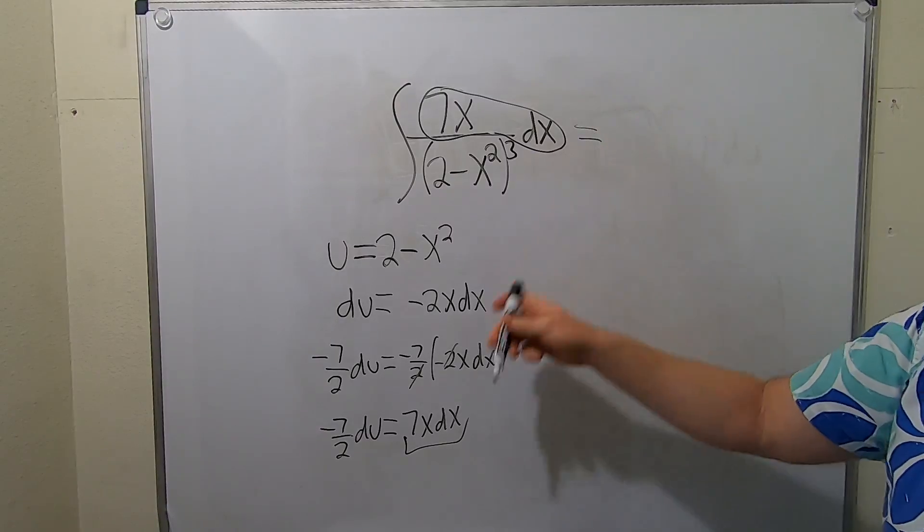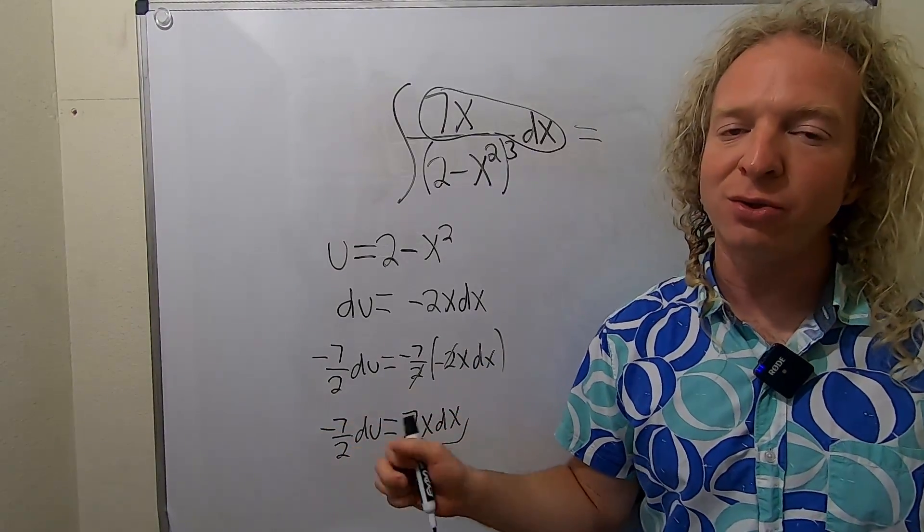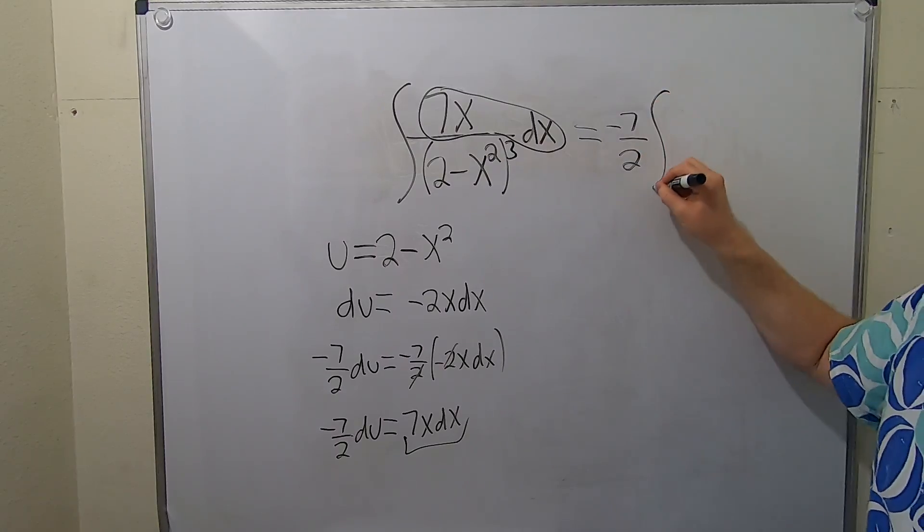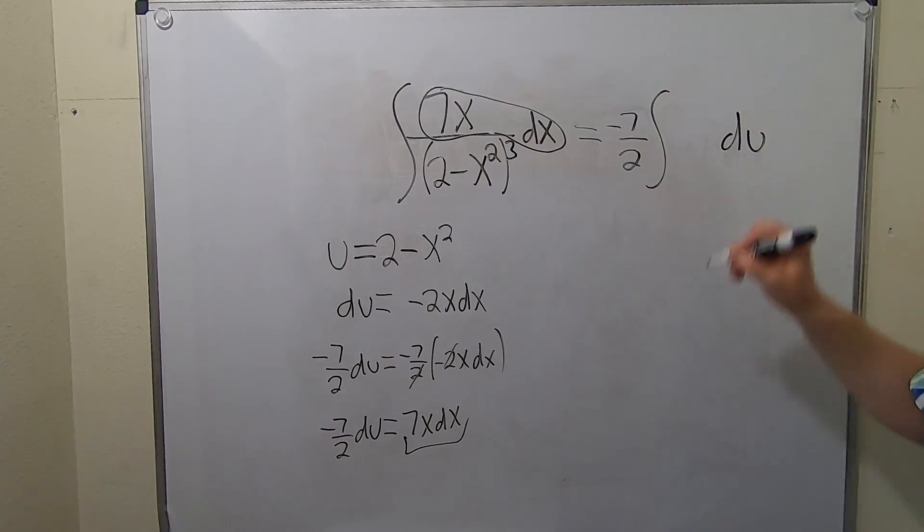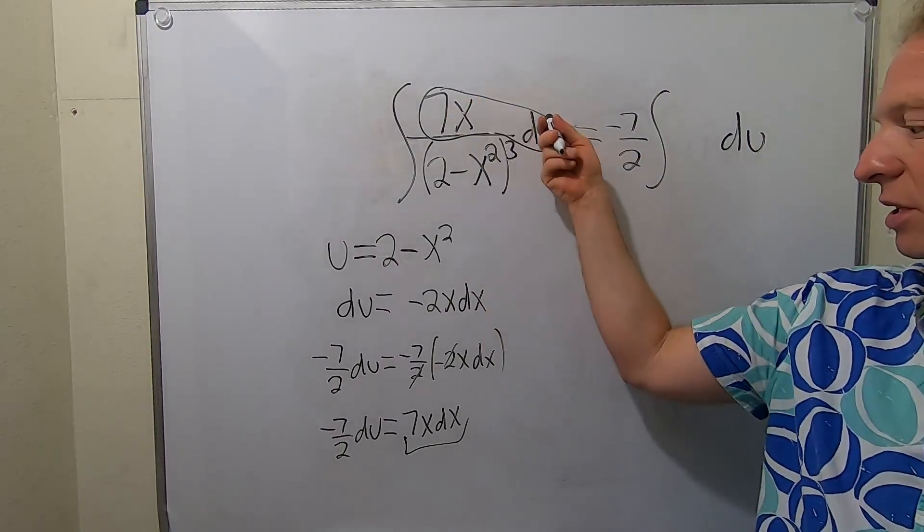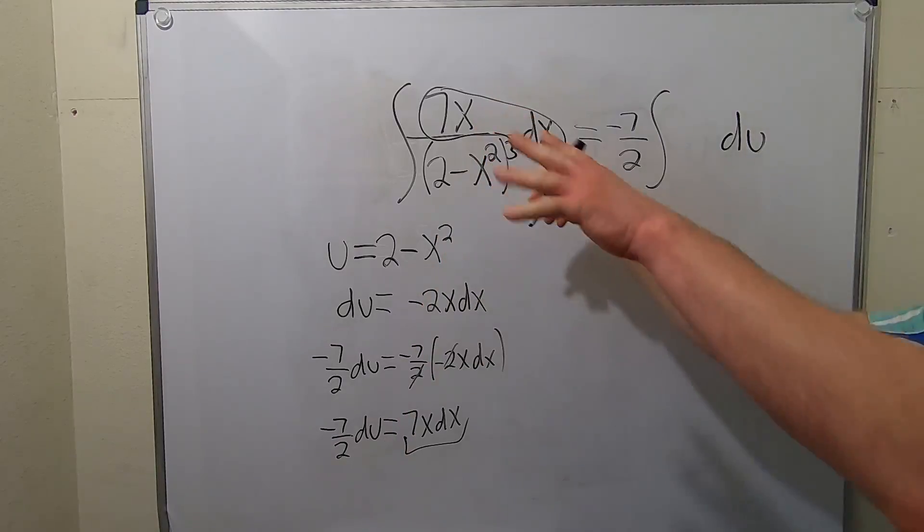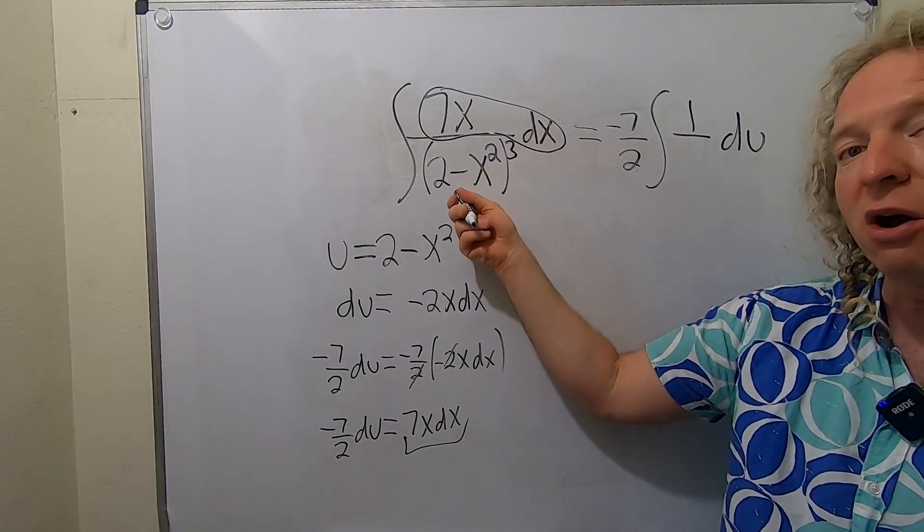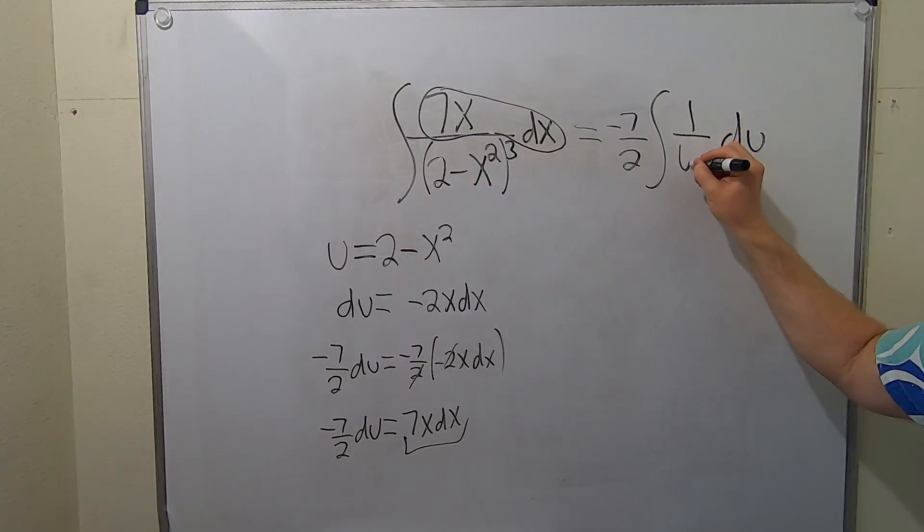Let's replace that. You can always pull constants out. It's usually a good idea. So negative 7 halves du. What's left? We replace this with this. We're just left with 1 over and then this to the third power. But we know that this is u, so this is u to the third power.